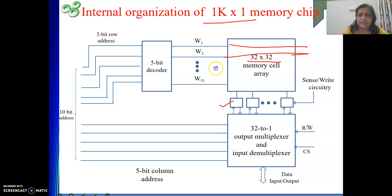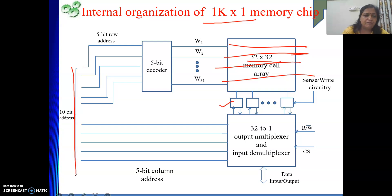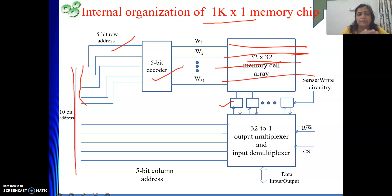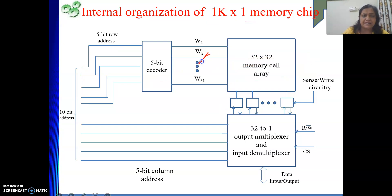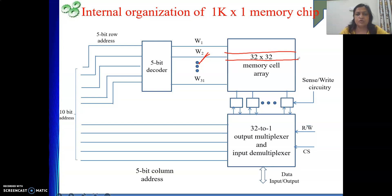In my memory cell array, 32 by 32 is there. To select a particular row, in your 10-bit address the first 5 bits will go to a 5-bit row address decoder to select a particular row. If I apply 5-bit input, I can have 32 different outputs, and at a time one output will be enabled — so that particular row will be selected. Suppose a certain address is given and this line is active; whatever cells are in this row, there are 32 cells, because the size of each row is 32 columns. So one row is selected, and all 32 cells in that row are selected.